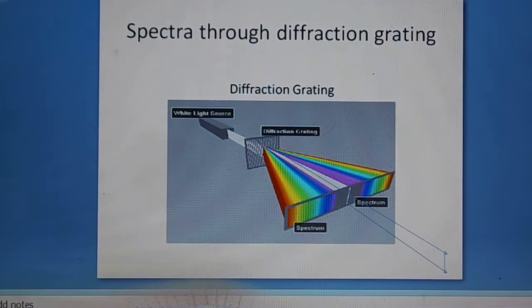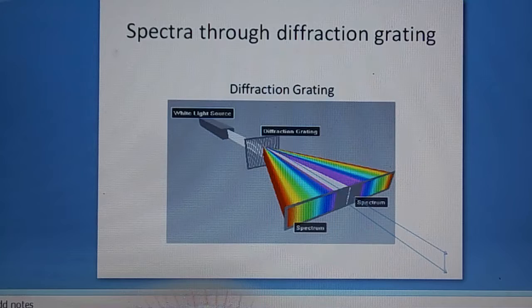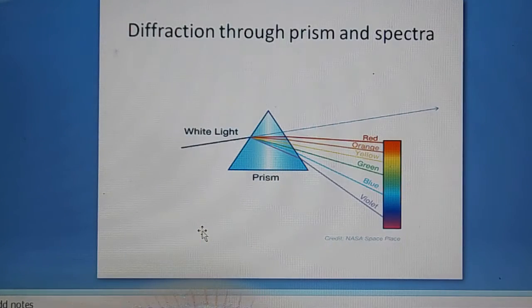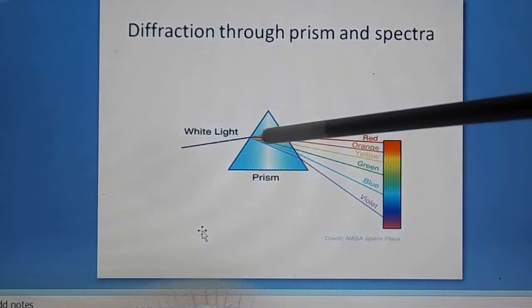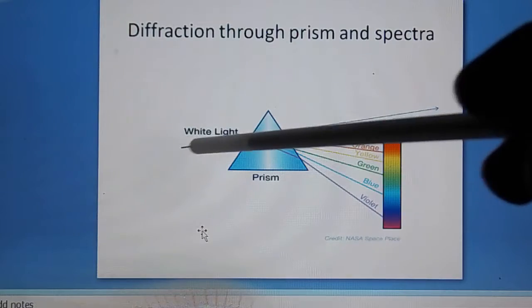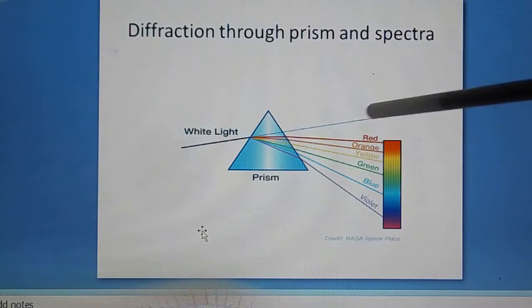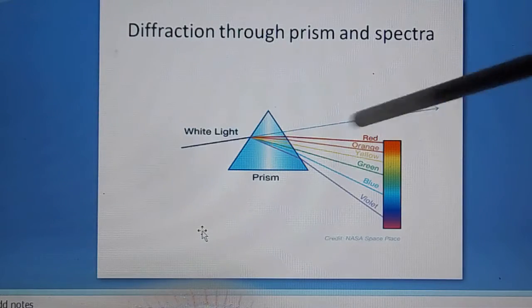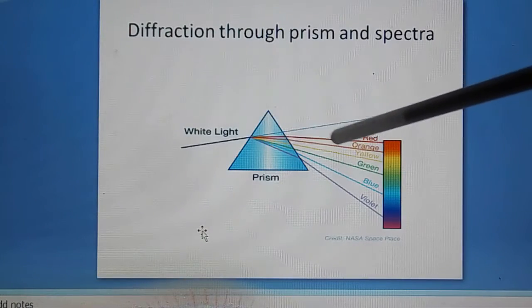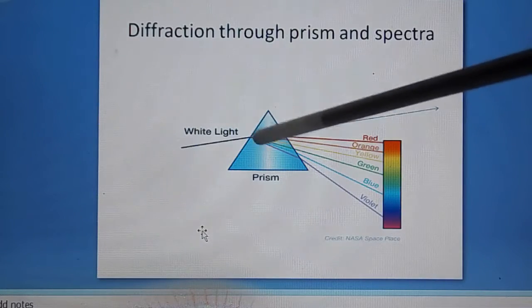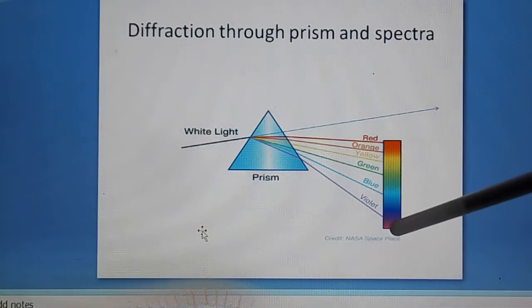See the example of another case here, of a prism. You can see in the prism the original white light is going through this way. This is the path of the white light if there is no diffraction. It should have gone like this. But the red color is showing minimum deviation and the violet color is showing maximum deviation.